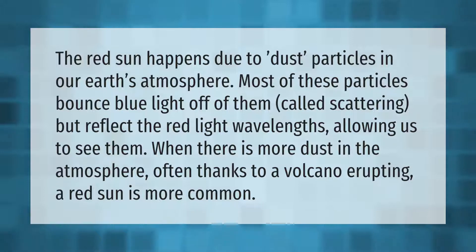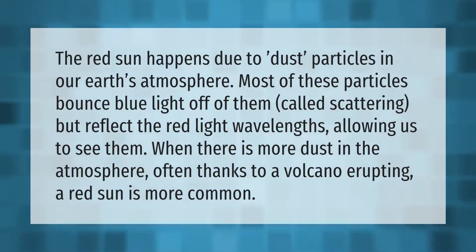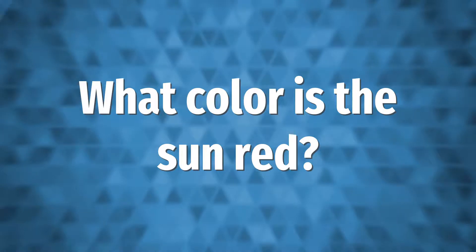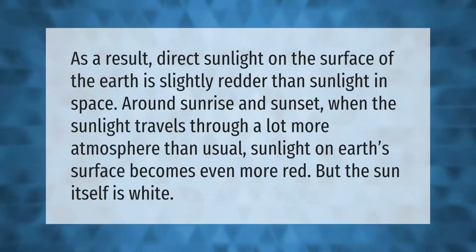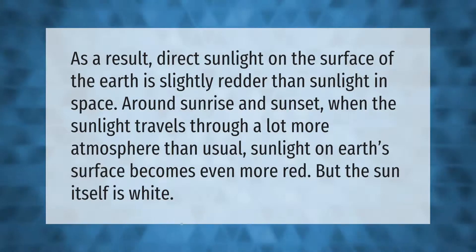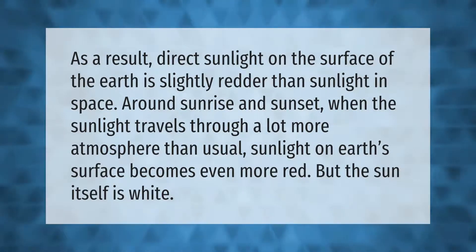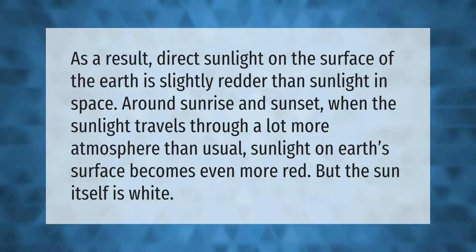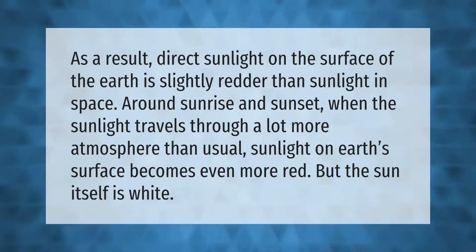When there is more dust in the atmosphere, often thanks to a volcano erupting, a red sun is more common. As a result, direct sunlight on the surface of the earth is slightly redder than sunlight in space. Around sunrise and sunset, when the sunlight travels through a lot more atmosphere than usual, sunlight on earth's surface becomes even more red.